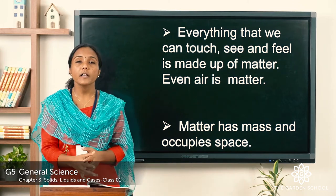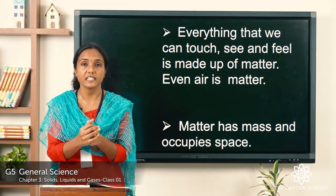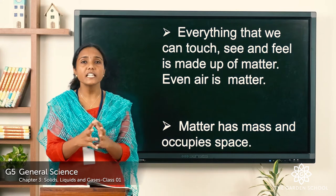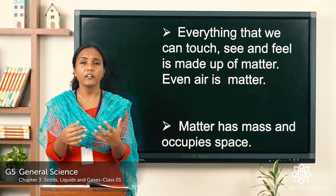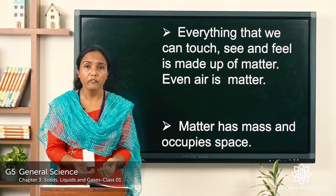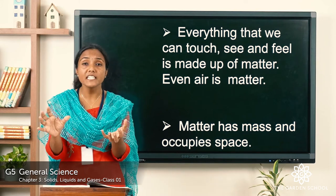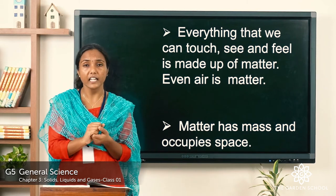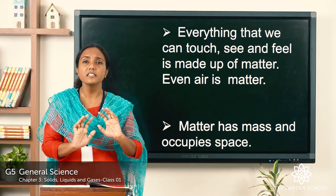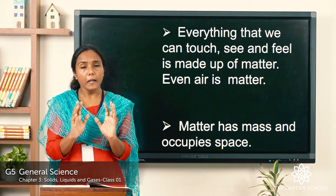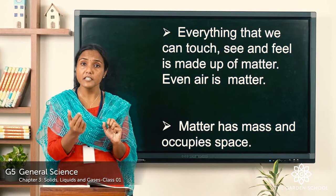Matter has mass and it occupies space. Whatever things we see — for example, a table, chair, fan, bed, laptop, phone — all have mass. Mass means weight, and everything occupies space. So whatever things we see in and around us is made up of matter, which has mass and occupies space.